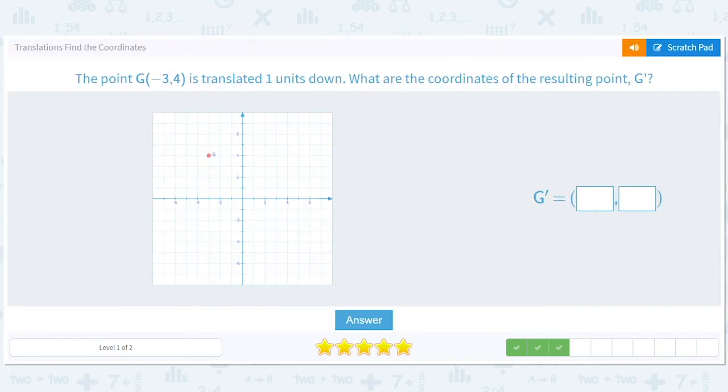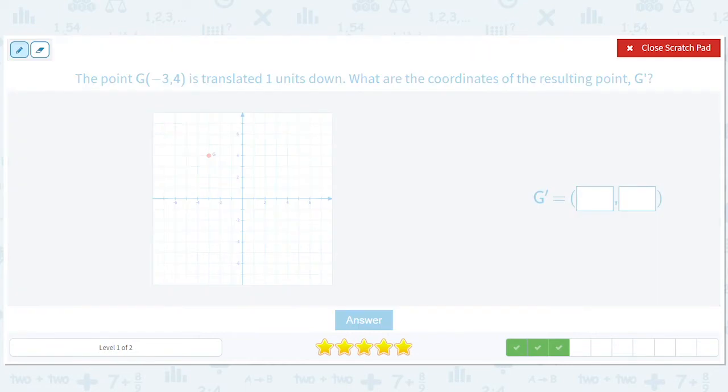All right. How about moving this down by one? So four minus one will give us three. And we'll get that point right there, negative three, three.